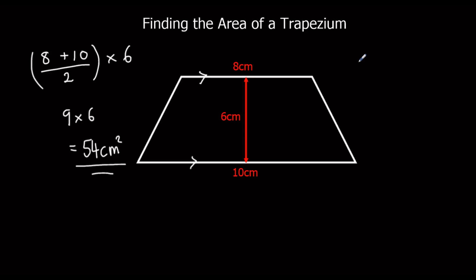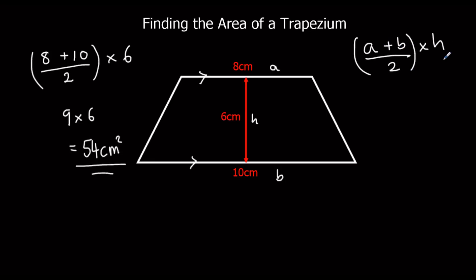So we could say if this side was A, this side was B, and we call this H, the formula is: A plus B over two, times H. So the area of a trapezium is A plus B over two times H — the two parallel sides, take their average by adding them and halving, then multiply by the perpendicular height.